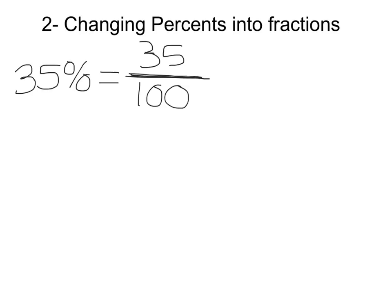Now if we're able to reduce, we want to simplify this to an equivalent fraction. So if I divide both the numerator and denominator by 5, I would get 7 over 20, or 7 twentieths.